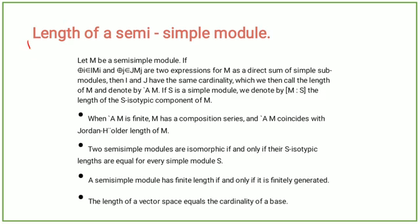Length of a semi-simple module. Let M be a semi-simple module. If two expressions for M as a direct sum of simple submodules, then i and j have the same cardinality, which we then call the length of M and denote by ℓ(M). If S is a simple module, we denote by M_S the length of the S-isotypic component of M.